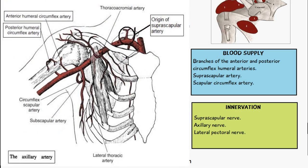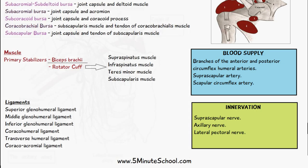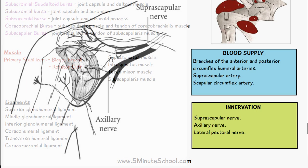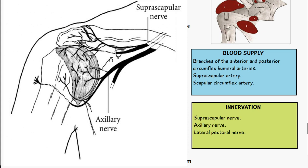The blood supply to the shoulder joint involves branches of the anterior and posterior circumflex humeral arteries, the suprascapular artery, and the scapular circumflex artery. The shoulder joint is innervated by the suprascapular nerve, the axillary nerve, and the lateral pectoral nerve.